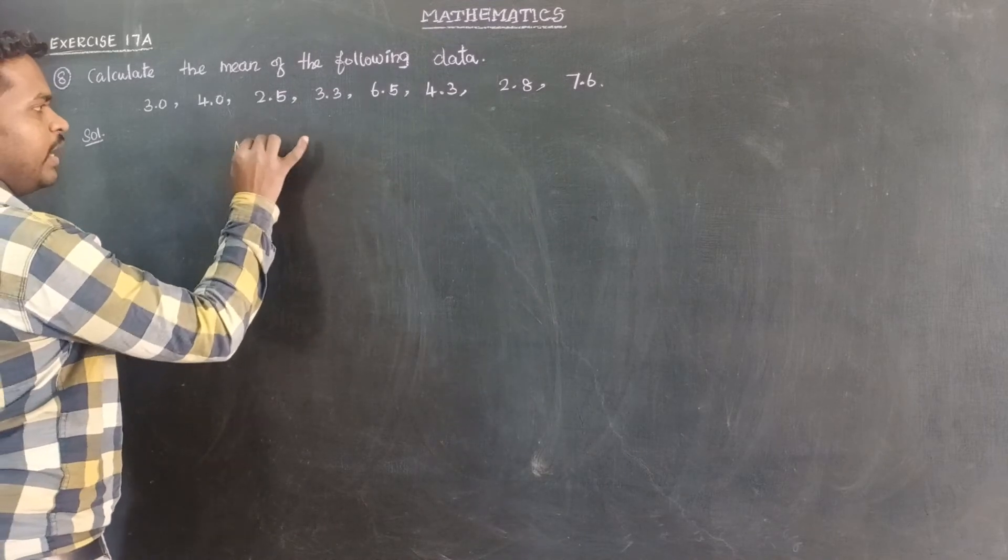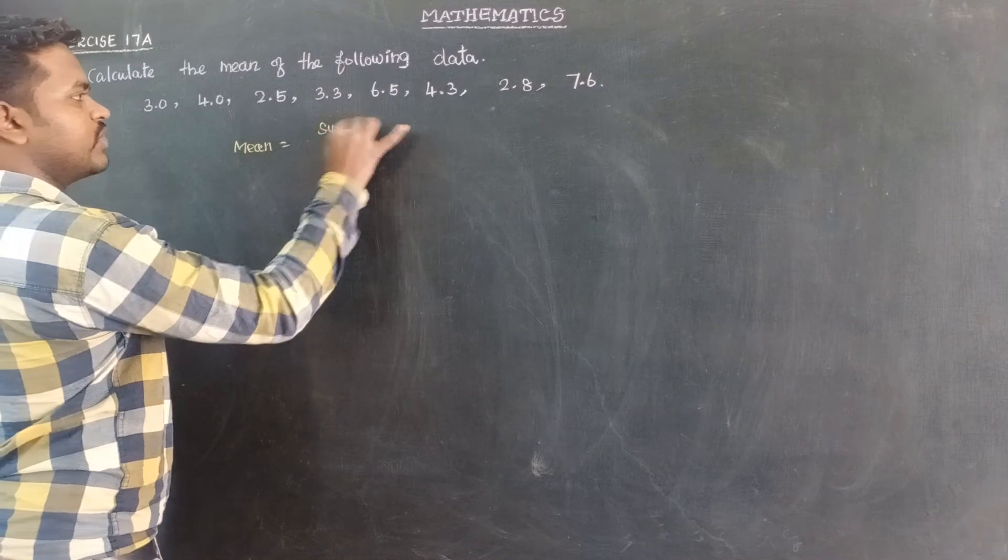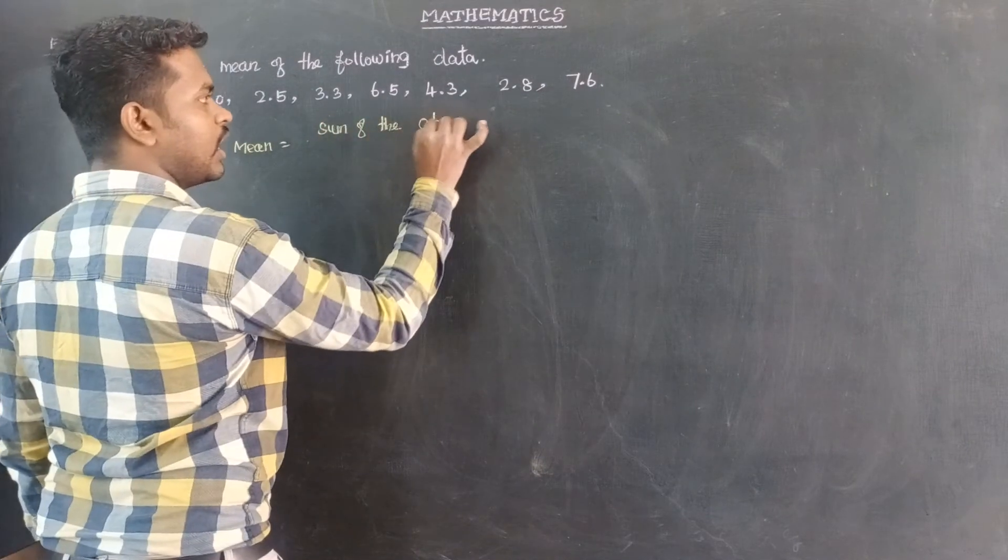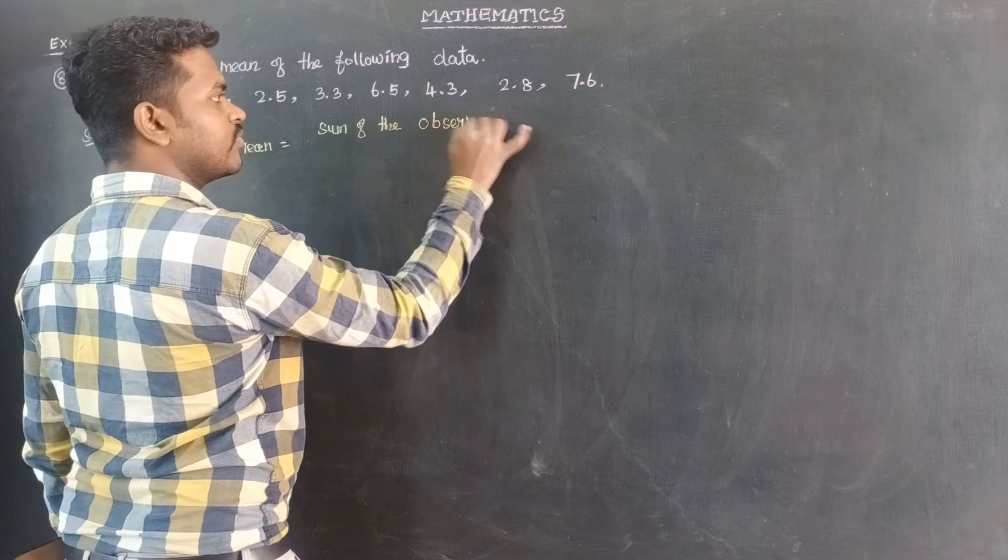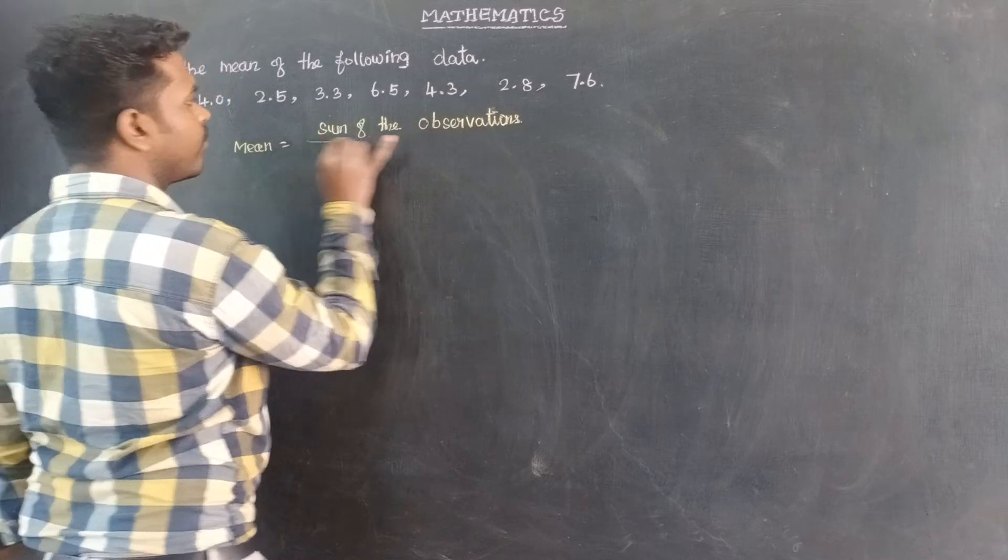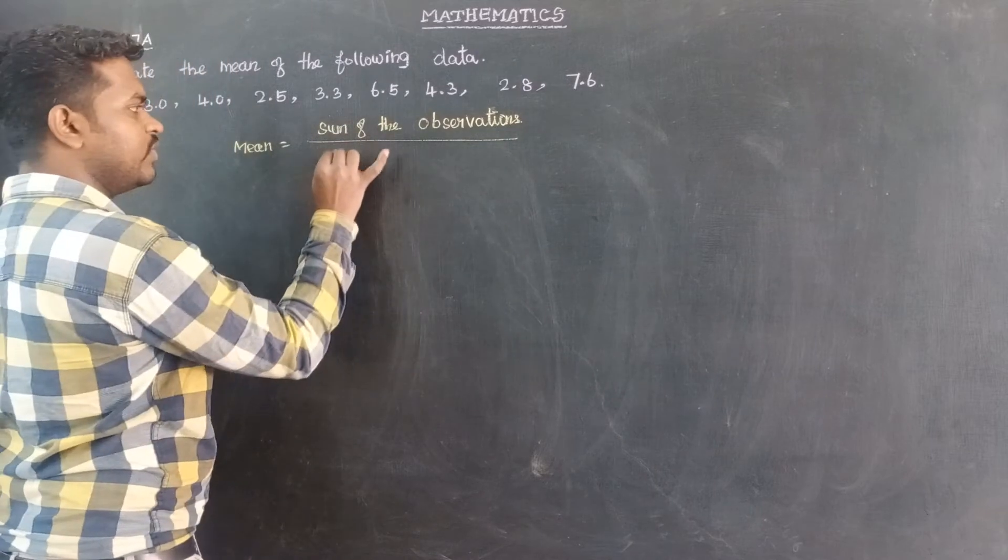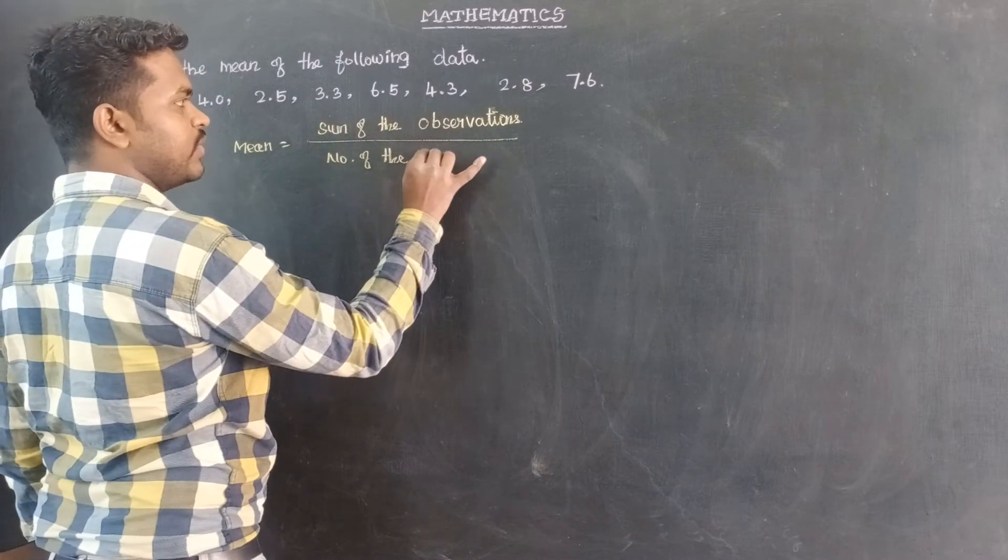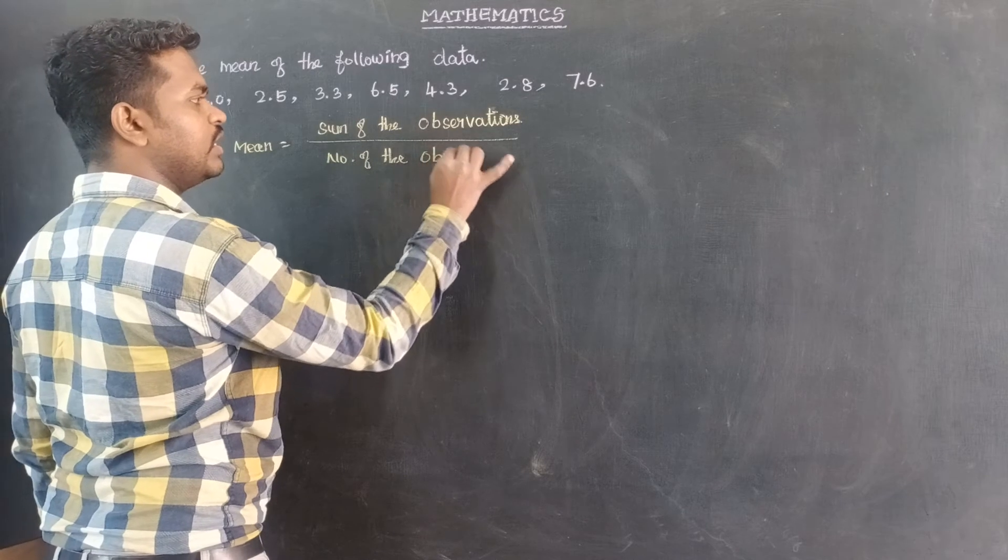Mean would be the formula. Mean is equal to sum of the observations divided by number of the observations. Mean formula: sum of the observation by number of the observation.